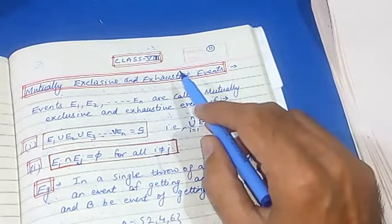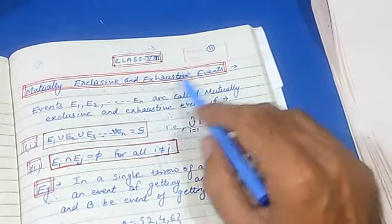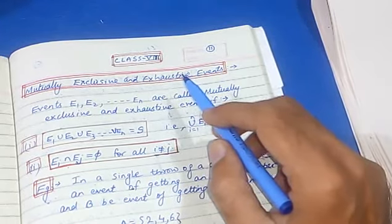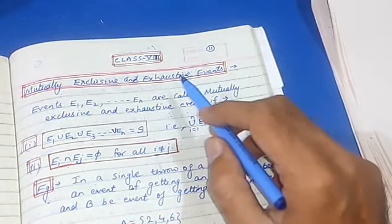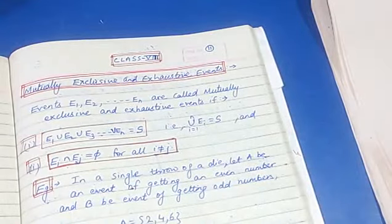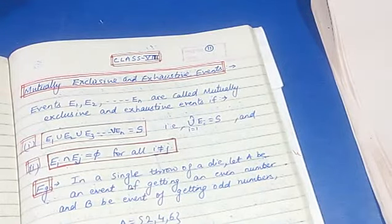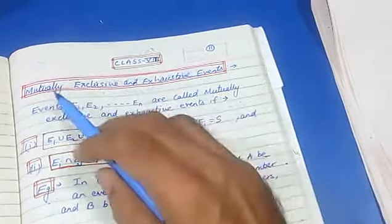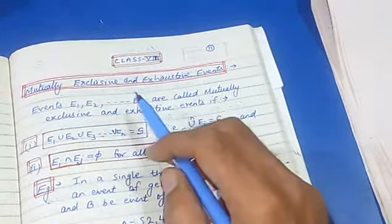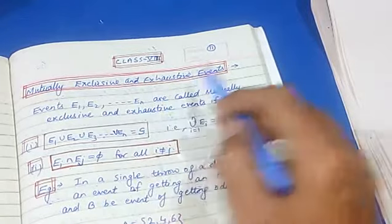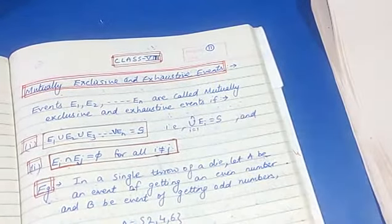Two or more events are said to be exhaustive if they collectively form the sample space. If there are two or more events and their union equals the sample space, then we call them exhaustive events. So, mutually exclusive and exhaustive events must satisfy both these conditions.